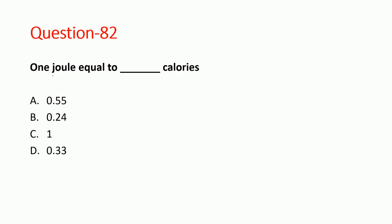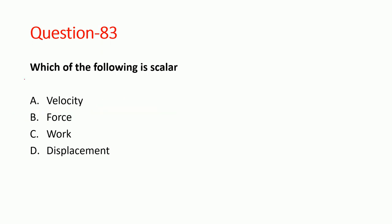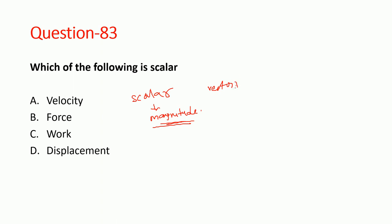Question 82: one Joule is equal to 0.24 calories. Option B is correct. Next question: which of the following is a scalar quantity? A scalar quantity has magnitude only, while a vector quantity has both magnitude and direction. Velocity has magnitude and direction, so it is a vector. Force and displacement also have direction. Work has only magnitude. Option C — work — is correct.